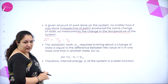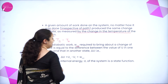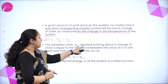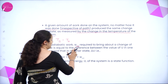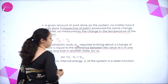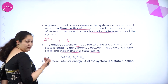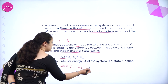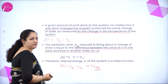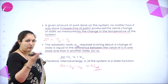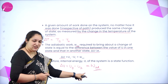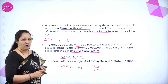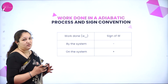The adiabatic work WAD required to bring about the change in the state is equal to the difference between the value of U in the initial and the final state. So we write delta U equals UB minus UA, which is nothing but equal to the work done on the system. So the work done on the system is equal to the change in internal energy.